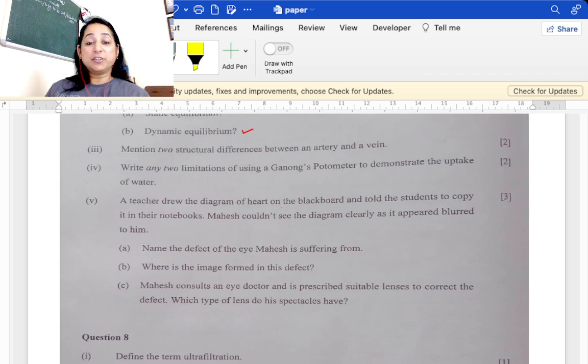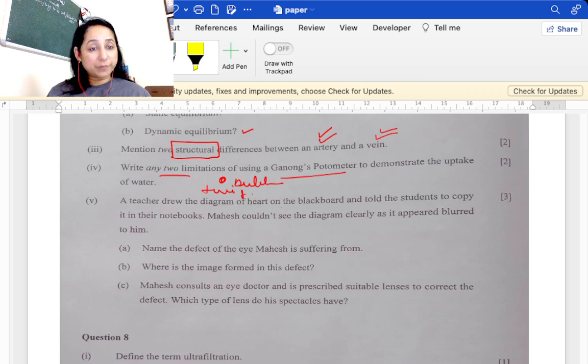Mention two differences between artery and vein, structural differences. Arteries have a narrow lumen, vein has wide lumen. Arteries have no valves, veins have valves present in them. Write two limitations of using Ganong's photometer: one is the insertion of bubble is difficult, and two is the twig cannot survive for longer period of time.